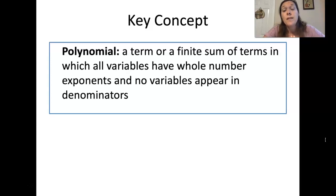What is a polynomial? A polynomial is a term or a finite sum of terms in which all variables have whole number exponents and no variables appear in the denominators. You can't have fractional exponents, and you can't have negative exponents, because negative exponents would move them down to the denominator. They need to be whole numbers and positive, with terms being added or subtracted together.